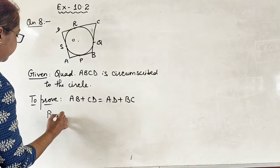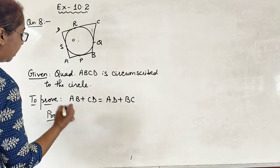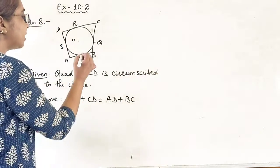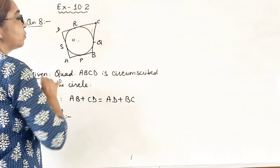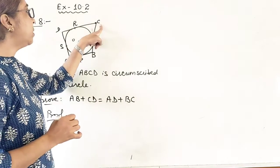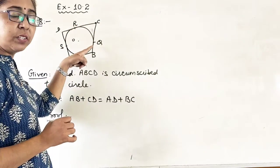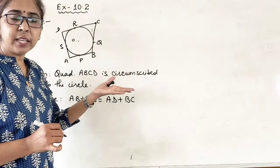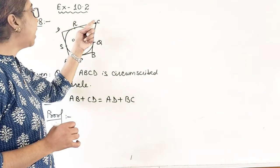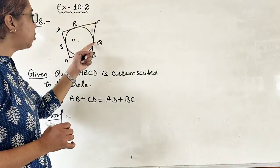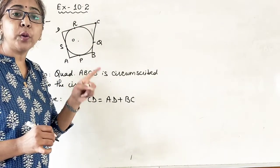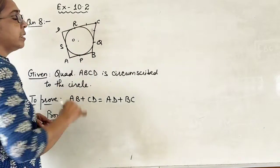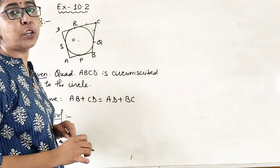Now for the proof, we will apply that theorem which I told you just now. If this is an external point, let us say I am taking this one first. From external point, these two are the tangents because these lines are just touching the circle. That's why these are the tangents. And we know that the length of the tangent from an external point are always equal. That's why CR is equal to CQ.